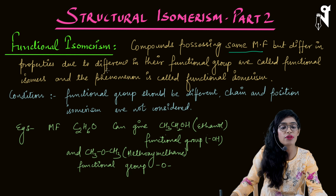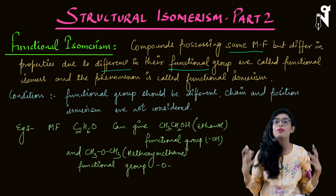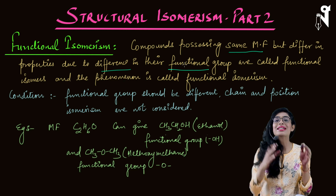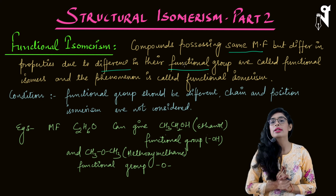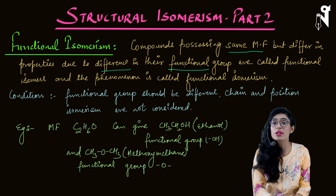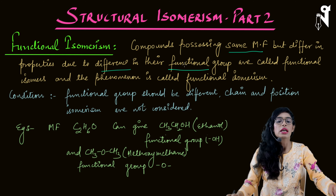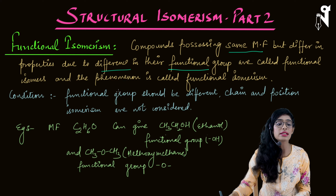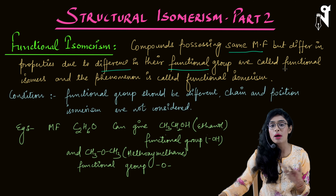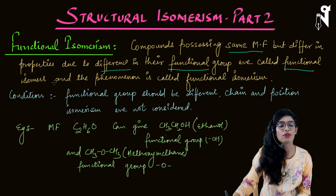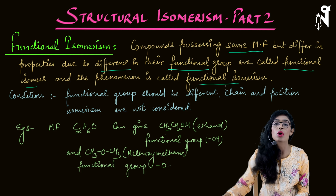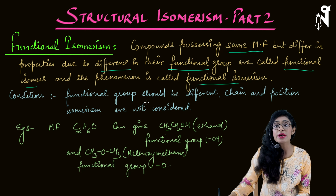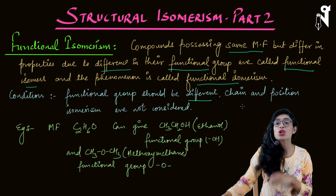Let's start with functional isomerism. The definition: compounds possessing the same molecular formula but differing in properties due to the difference in their functional group. We will have two or more different compounds with the same molecular formula but different functional groups. They will have differences in properties due to the difference in the functional group, and that is why these compounds are called functional isomers and the phenomenon is called functional isomerism.